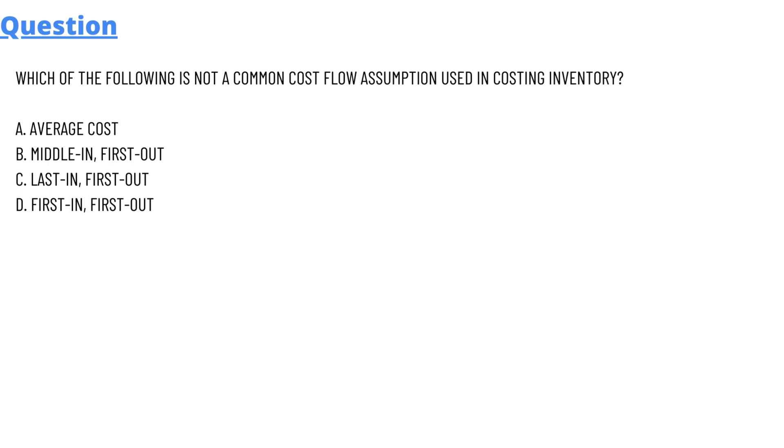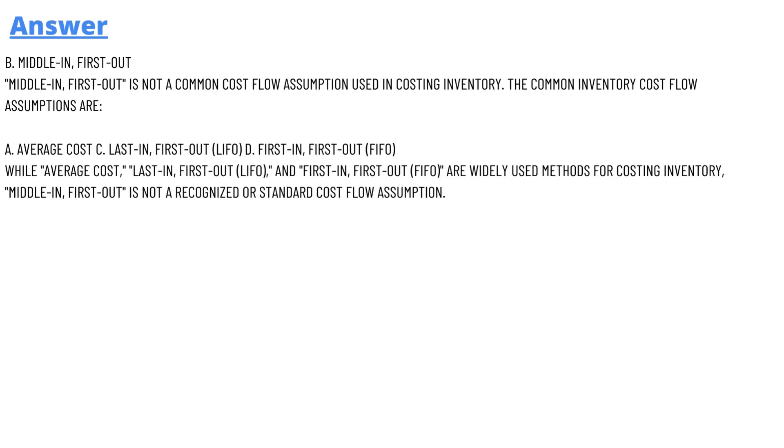Option A: average cost, option B: middle in, first out, option C: last in, first out, and option D: first in, first out. And the answer of the question is option B: middle in, first out.